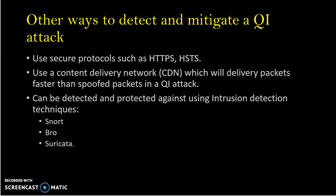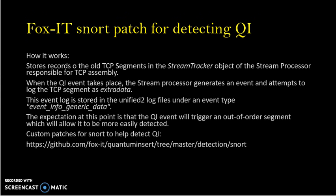Other ways to detect and mitigate against a QI: Use secure protocols such as HTTPS and HSTS. Use a content delivery network, which will deliver packets much faster than spoofed packets in a QI attack. QI can also be detected and protected against using IDS tools such as Snort, Bro, and Suricata. Fox IT created a patch for Snort for detecting QI, and there is a link to the GitHub page for Fox IT where you can download and test this patch for Snort.